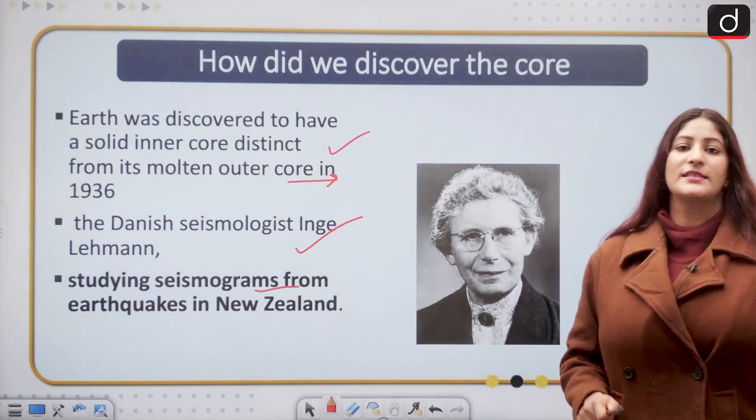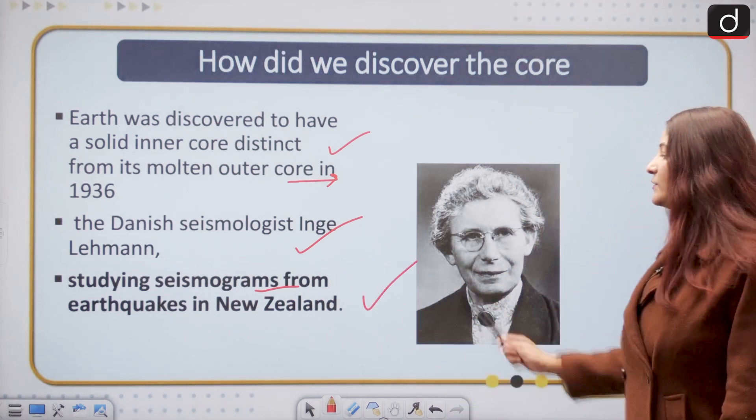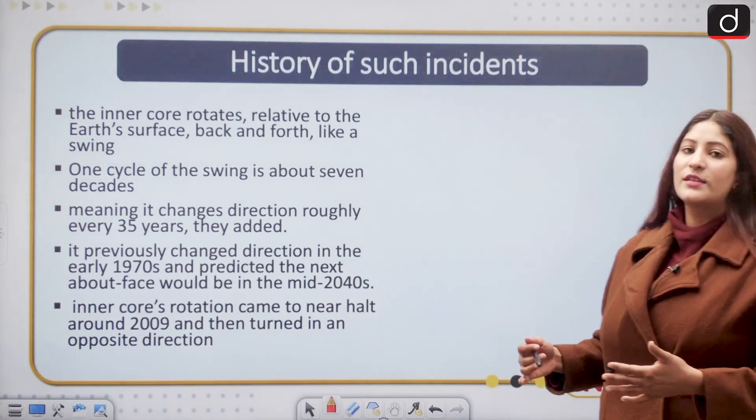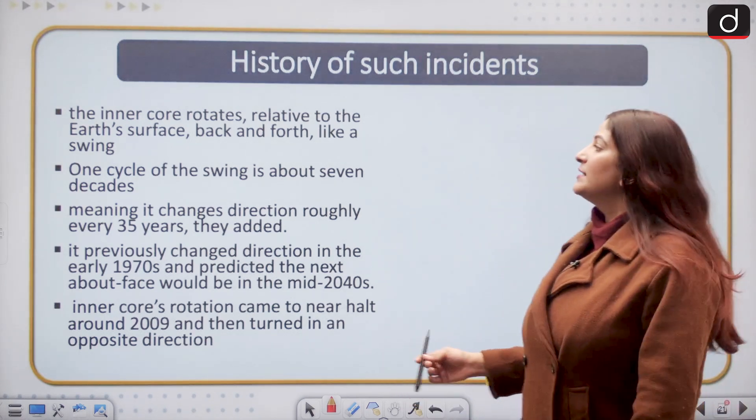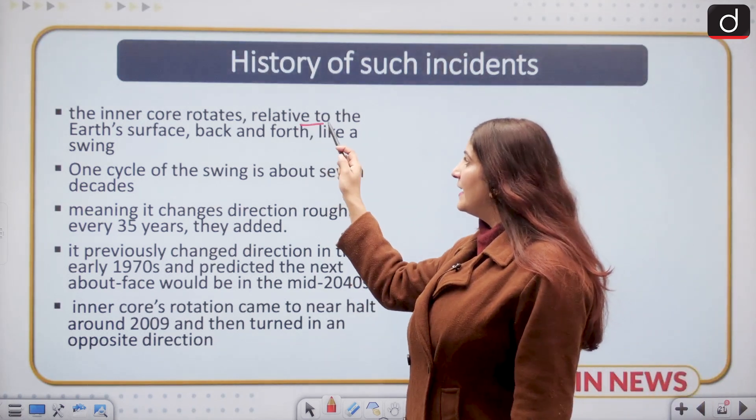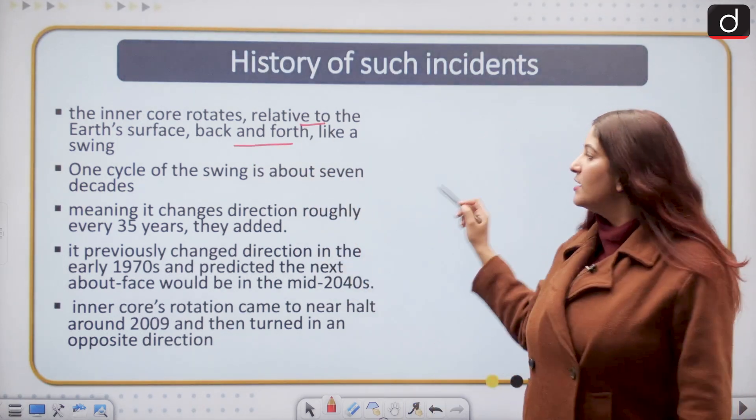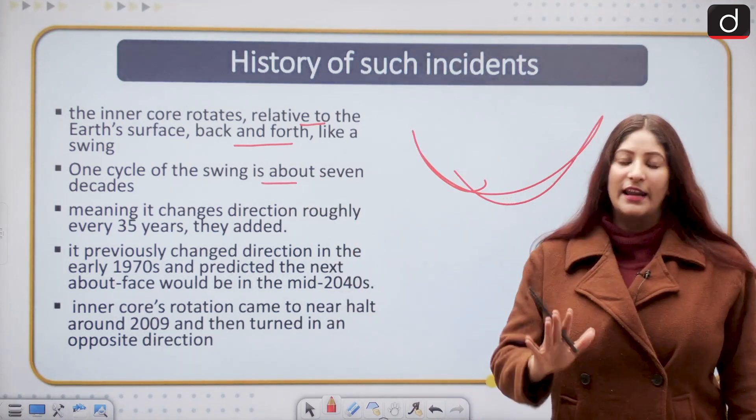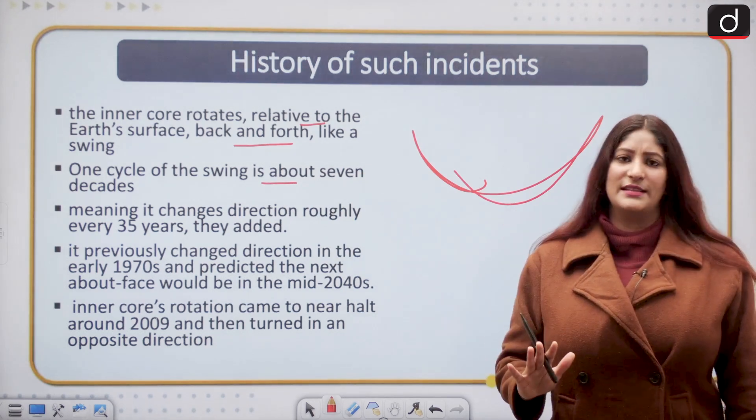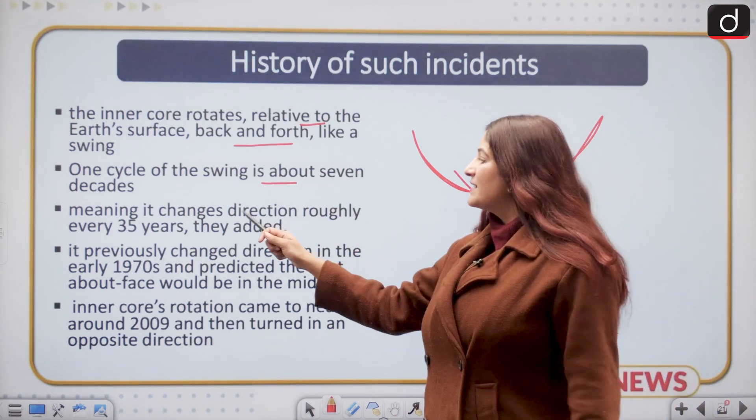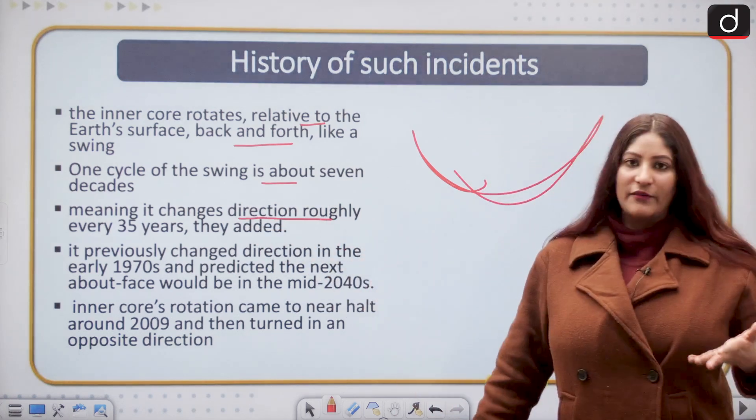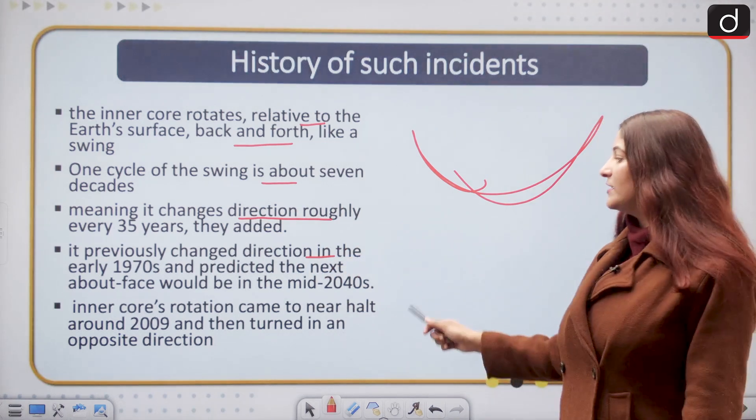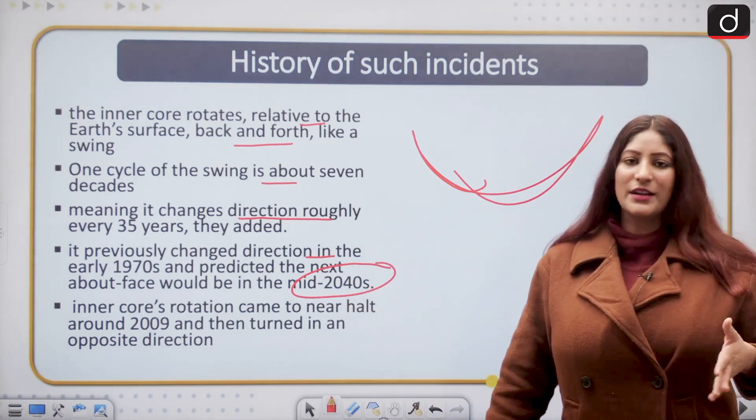Moving ahead, we talk about history of such incidents where the inner core started rotating differently. The inner core rotates relative to the earth's surface back and forth, just like a swing. One cycle of the swing is about seven decades. These are just theories until proven. It means it changes direction roughly every 35 years. It previously changed direction in the early 1970s and was predicted to change in mid 2040s.